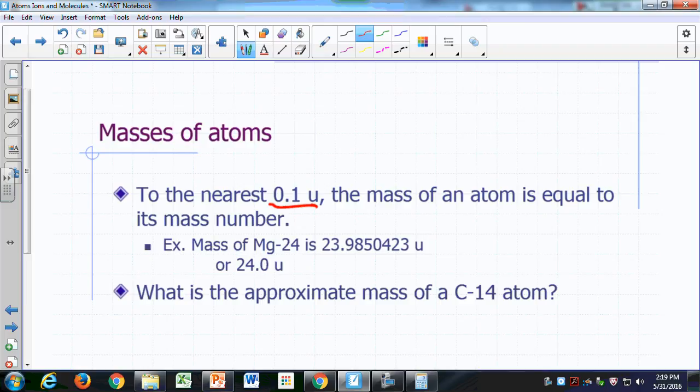So you don't need to look at the mass of a particular atom. All you have to do is just whatever the mass number is, figure out the mass based on the mass number. To the nearest tenth of an atomic mass unit, that's the mass of the atom.